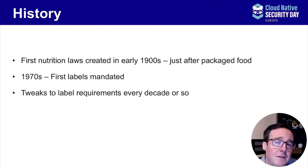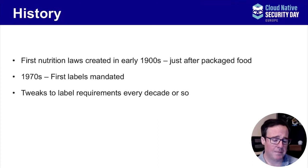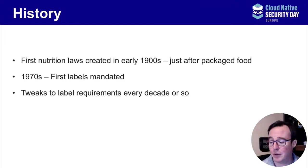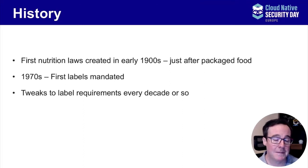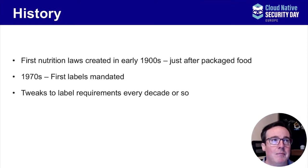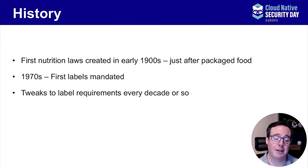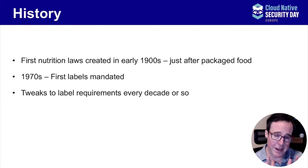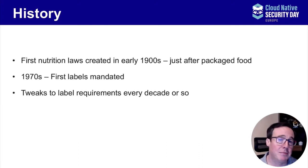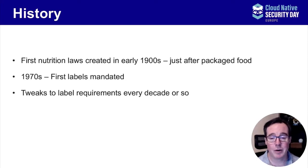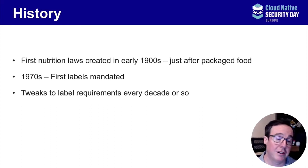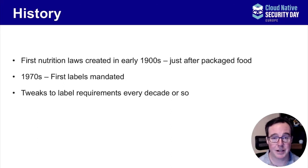The nutrition laws first came around in the early 1900s when the FDA was formed. These types of labels are now all around the world in one form or another. Their creation came from packaged foods — as vendors started selling packaged goods, some started using smaller packages, cheaper ingredients, or more dangerous ingredients. People started dying or not getting their money's worth, and the government decided that wasn't acceptable, so laws started getting created.